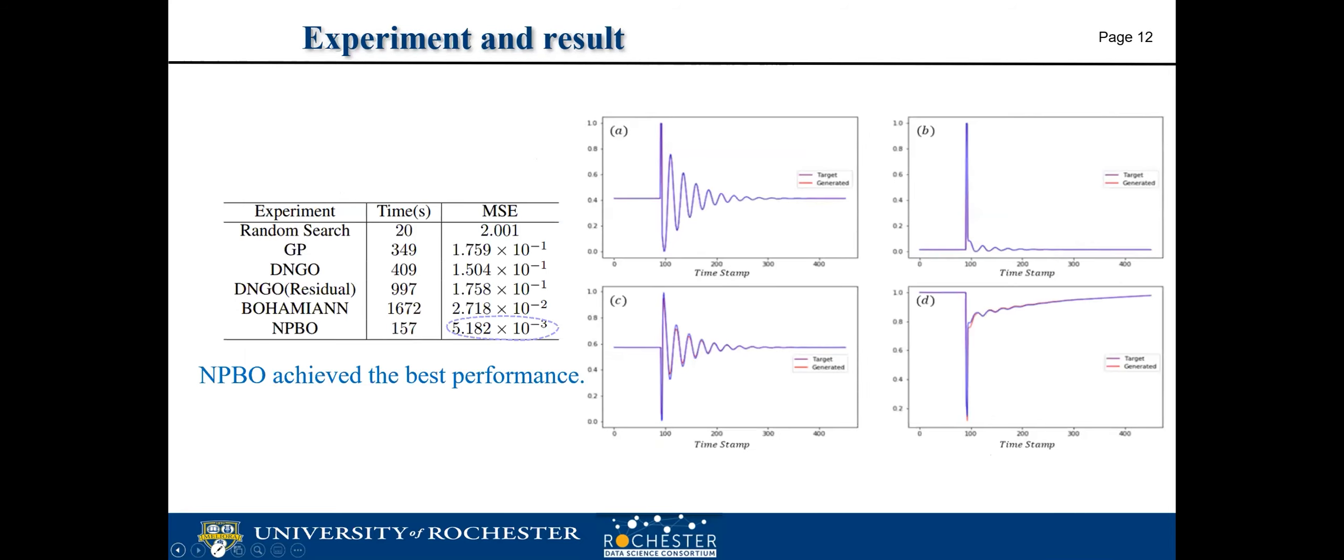This is our result. We use mean squared error to measure our performance. The mean squared error is defined by the L2 distance between the stereotypical parameter combination and the parameters we optimized. As you can see here, our NPBO performs best among all the methods. The right graph shows the corresponding output. As you can see, there's only a very small gap between the target output and our result. The purple line is the target output and the red line is our result. This indicates that our method makes the system perform stably as previously.